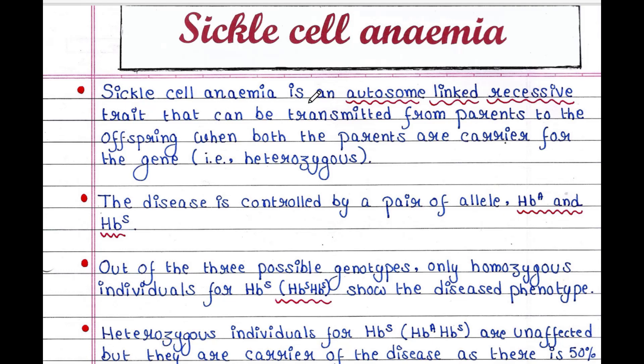Sickle cell anemia is an autosome-linked recessive trait. That means the gene responsible for this disease is present in one of the autosomes of our cell. It is a mutation that causes this disease, and in order to cause the disease, the mutation should be present in both alleles since it is a recessive trait. It can be transmitted from parents to offspring when both parents are carriers — that is, heterozygous.